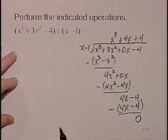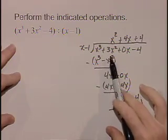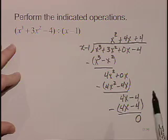So our answer, or our result, after dividing x minus 1 into x cubed plus 3x squared plus 0x minus 4 is x squared plus 4x plus 4.